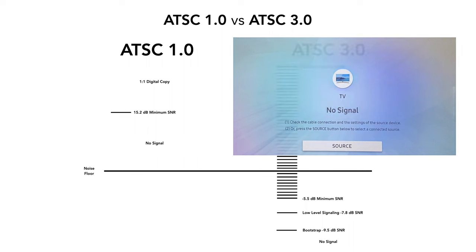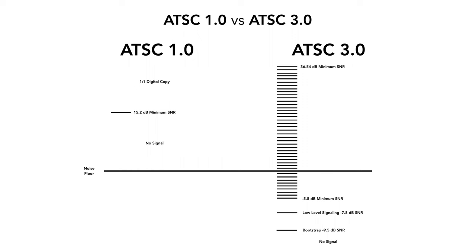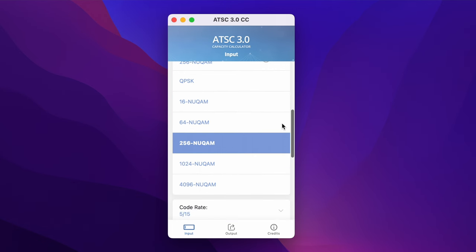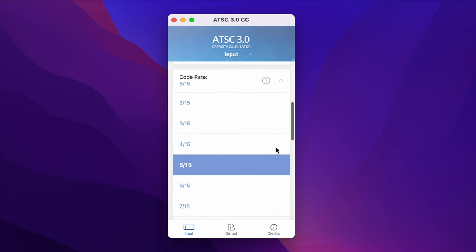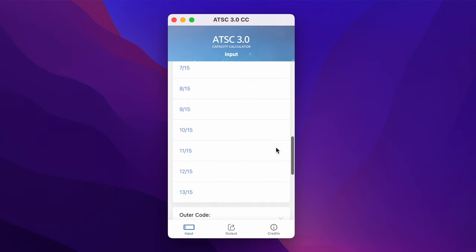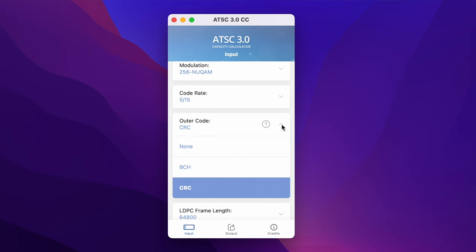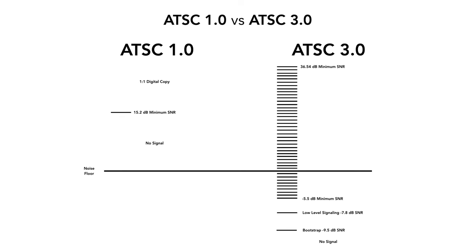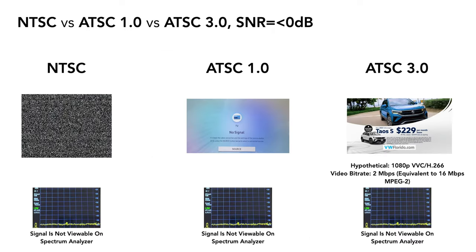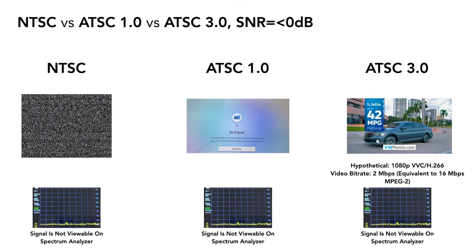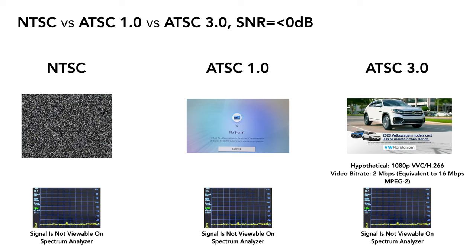You're going to see no signal displayed on your TV. And this is where things change with ATSC 3.0. There are a lot of different combinations — in fact, well over a million, almost 2 million combinations. Using a capacity calculator app on iOS and Mac, and even more combinations not depicted in that application, there are easily at least 10 million different combinations you could create with ATSC 3.0. So there can be an SNR as high as 36.54 decibels and as low as negative 5.5 decibels, meaning an ATSC 3.0 signal could be received way below where NTSC would turn to static and snow, and way below the point at which ATSC 1.0 would display no signal.